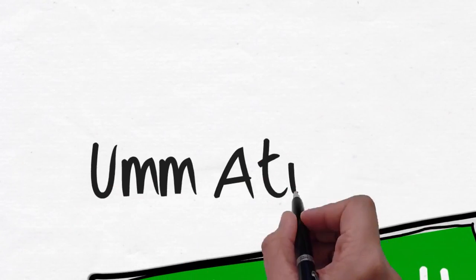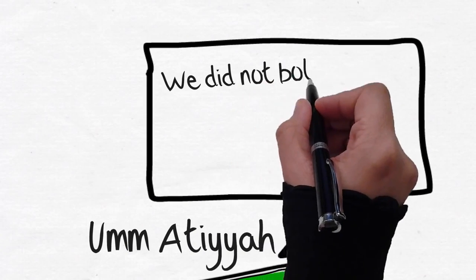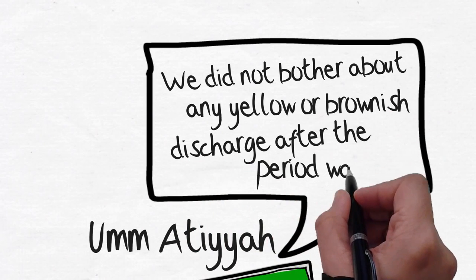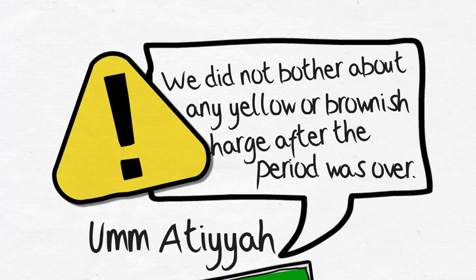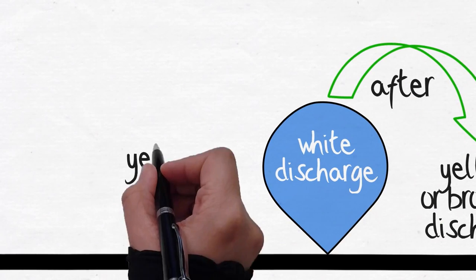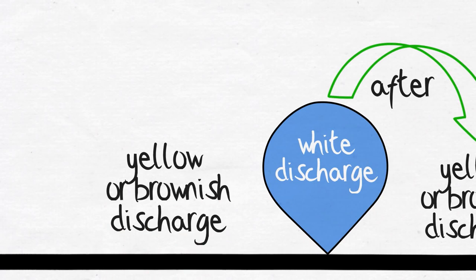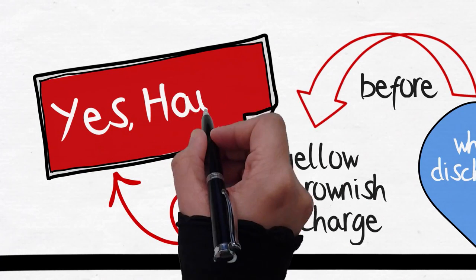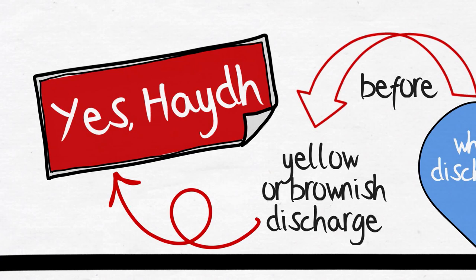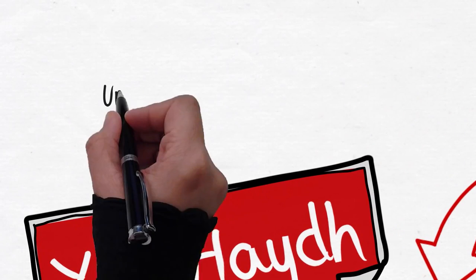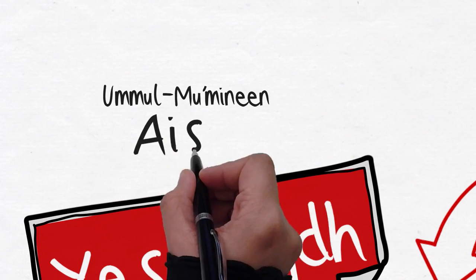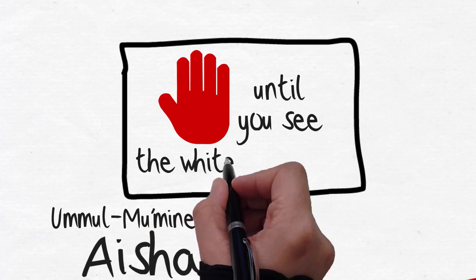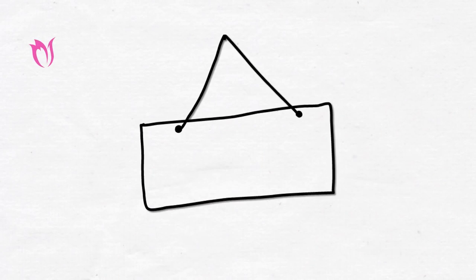Umm Atiyah said, we did not bother about any yellow or brownish discharge after a woman's period was over. But you should not rush, because the yellowish discharge which immediately follows the bleeding before the white discharge is still part of your menstrual flow. Women used to send small containers in which were rags with traces of yellow on them to Ummul Momineen Aisha, and she would say, do not hasten until you see the white discharge.